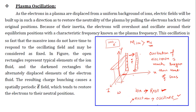The ions have an oscillation frequency and the electrons have an oscillation frequency. The ion oscillation frequency is much lower than the electron oscillation frequency. The plasma frequency is not equal to either alone, but we take the plasma frequency as the frequency of the electron. Overall, the plasma oscillation of ions is negligible compared to the electron oscillation.